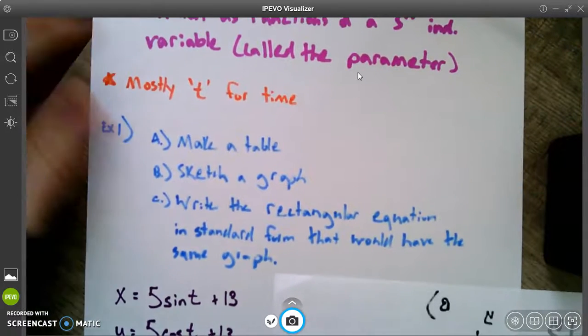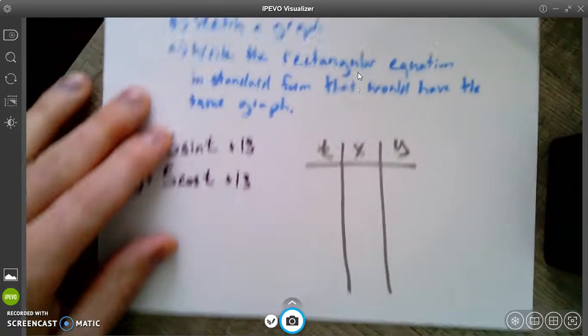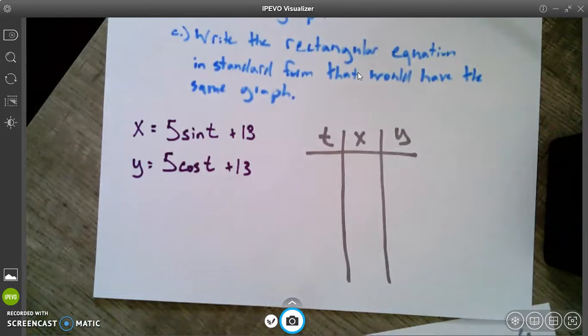So here are the equations we're going to use. The x-coordinate will always be 5 sine of t plus 13, and the y-coordinate will be 5 cosine of t plus 13. T is our independent variable. We can choose whatever values of t we want. And notice, if we're talking sine and cosine here, it makes sense that we should be using some radians, some circular type angles. So we're going to use 0 to 2π. The period of this thing is 2π.